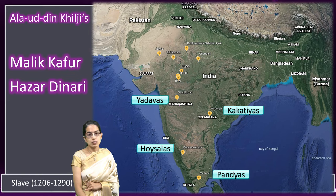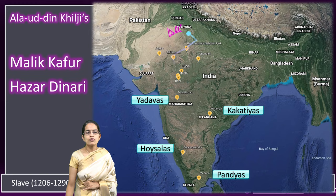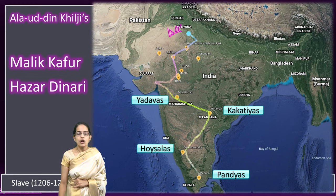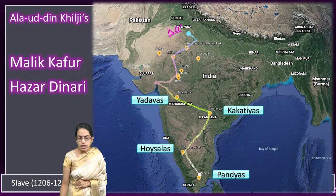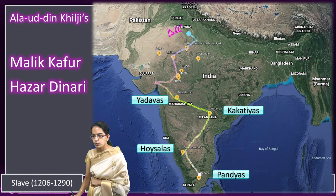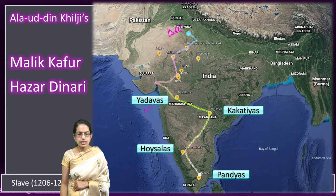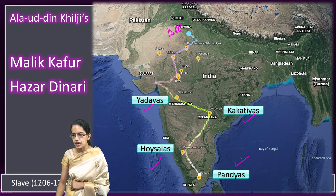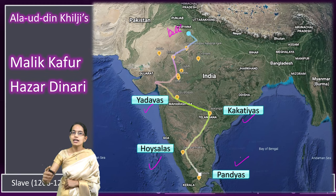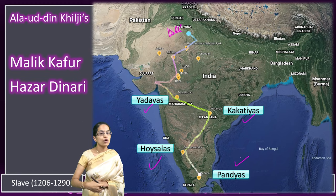Malik Kafur started his journey from Delhi, moved to the regions of Ranthambore, Chittor, Mandu, Dhar, and then further south into the Deccan. In the Deccan, he invaded Devagiri under the Yadavas, Warangal under the Kakatiyas, Dwarasamudra under the Hoysalas, and Madurai under the Pandyas. Importantly, he did not annex these southern regions but extracted tribute from them.